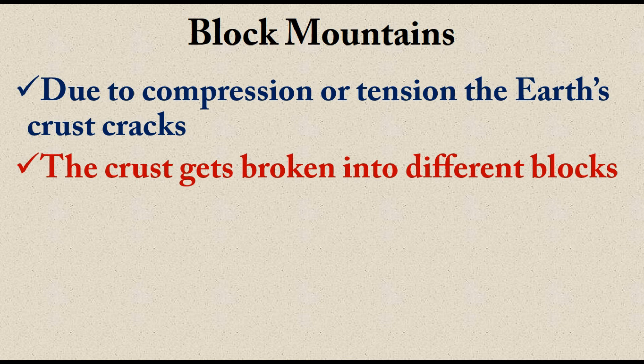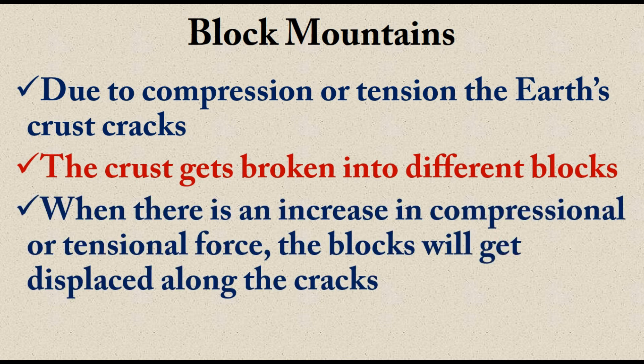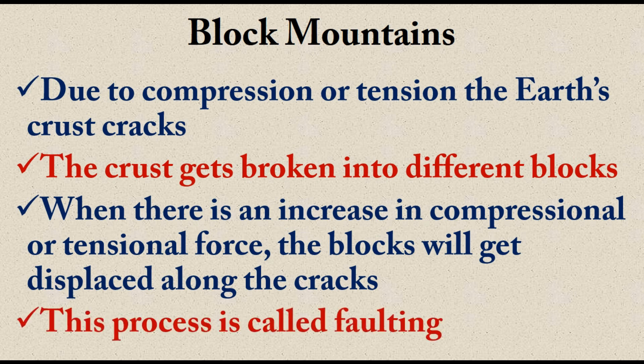If the stress continues or increases, displacement takes place along these fault lines — the blocks of rock may move upward, downward, or horizontally. This movement along fault lines is called a fault. Due to tension or compression, the horizontal layer of rock changes shape — a deformation occurs — and this leads to the formation of certain mountains called block mountains. This whole process is called faulting.